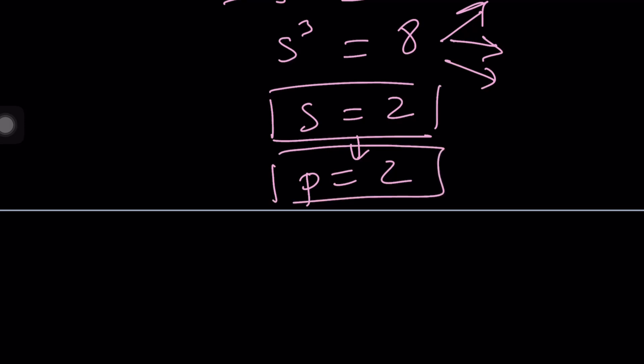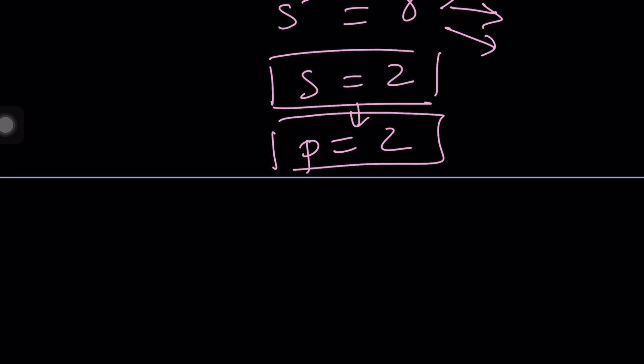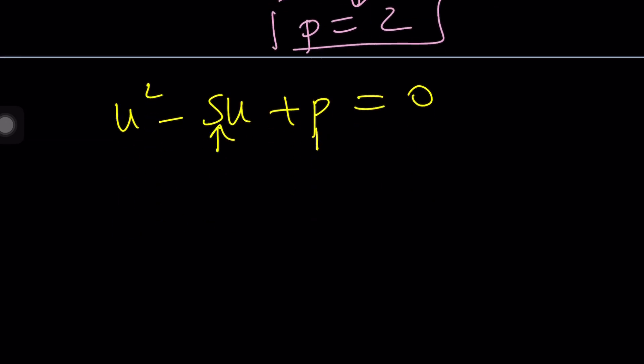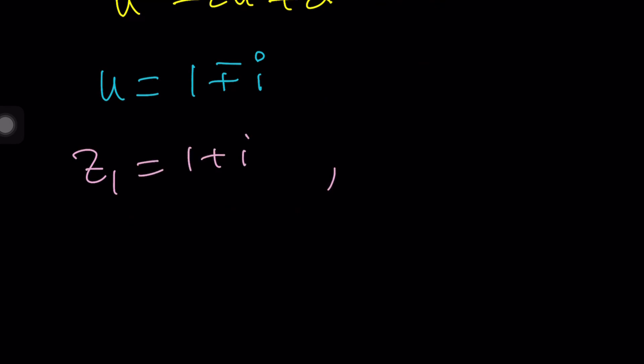And using Vieta's formulas, we are allowed to write an equation whose roots are Z and W. And that is U squared minus SU plus P equals 0. U represents Z and W. And since this is 2 and that's 2, we get U squared minus 2U plus 2 equals 0. And then you can kind of solve it using the quadratic formula. You're going to get 1 plus minus i or whatever method you like. And this means that the solutions are Z sub 1 is 1 plus i and Z sub 2... If Z sub 1 is this, W sub 1 is 1 minus i and vice versa. In other words, by finding Z and W at the same time, they're kind of switched around.